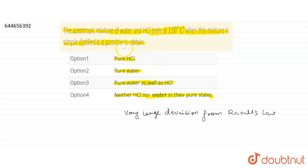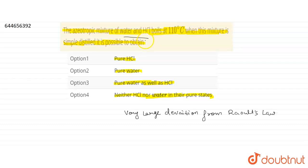Now the question is whether it is possible to separate or obtain pure HCl or pure water from this azeotropic mixture. Once the azeotropic composition is reached, we cannot separate or obtain any of the components in the pure state. A boiling liquid mixture of water and HCl boiling at 110 degrees Celsius produces a vapor of exactly the same composition as that of the liquid phase.